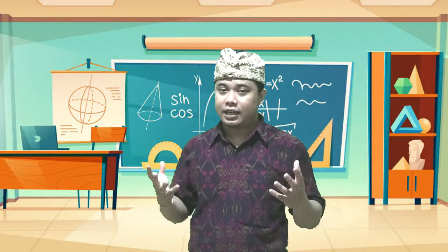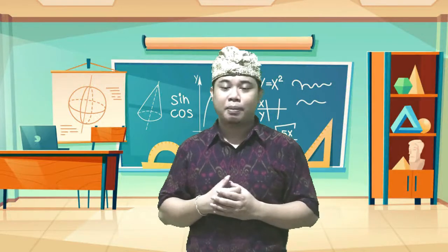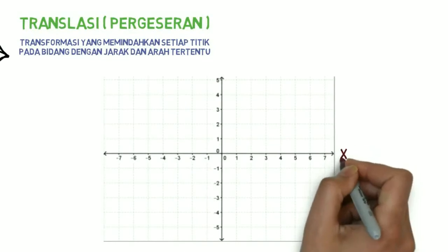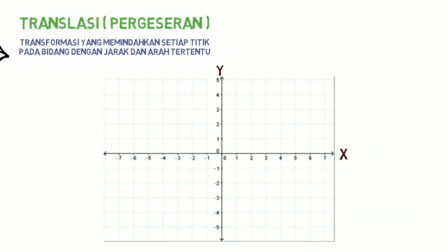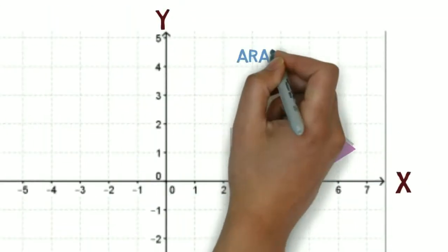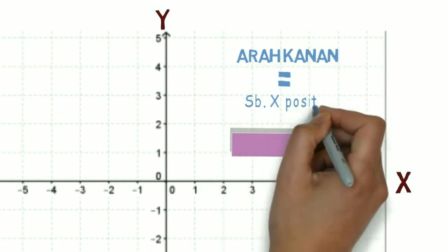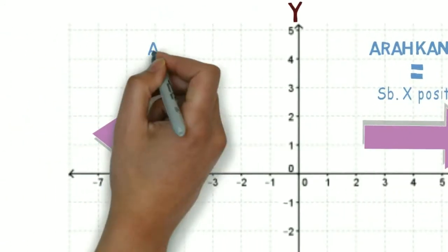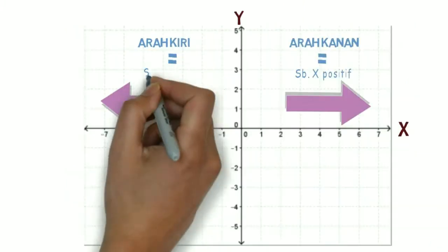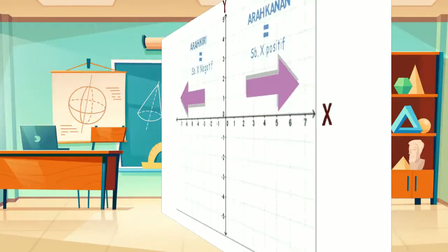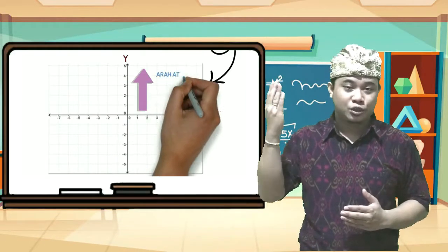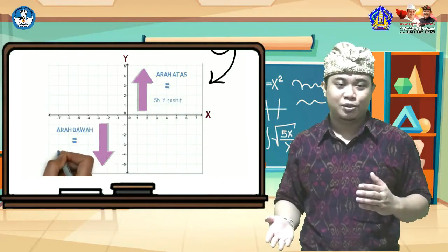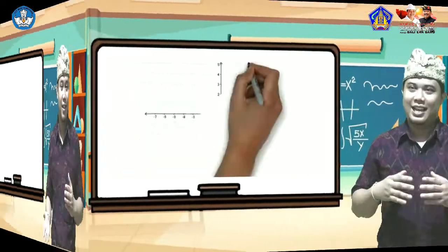Pada translasi, kita bisa melakukan pendekatan pada koordinat. Mari kita cermati koordinat Cartesius berikut. Dengan asumsi bahwa arah ke kanan adalah X positif, arah ke kiri adalah sumbu X negatif, ke atas adalah sumbu Y positif, dan arah bawah adalah sumbu Y negatif.